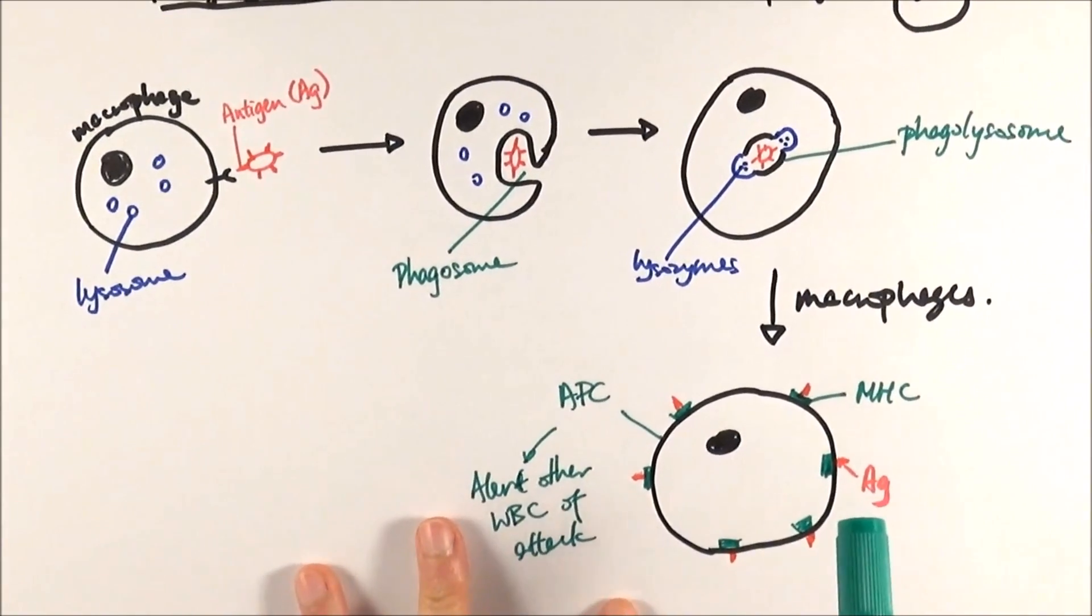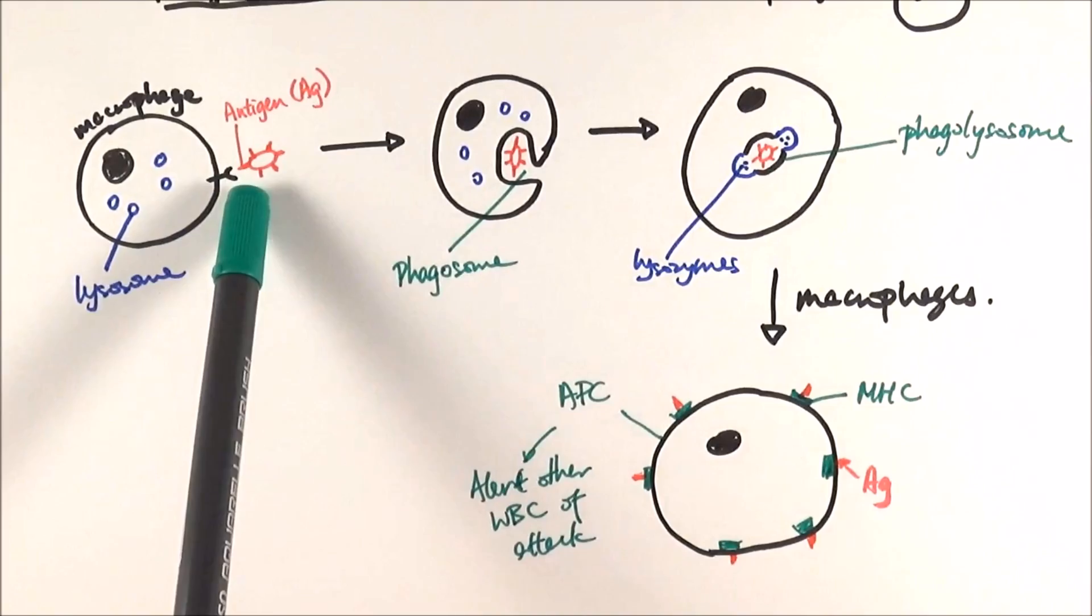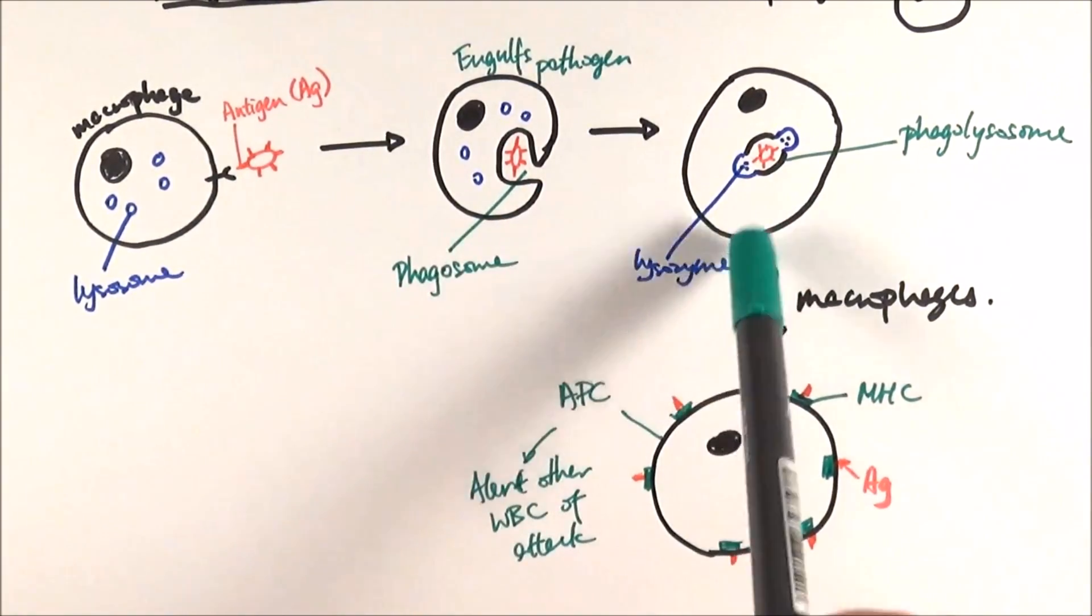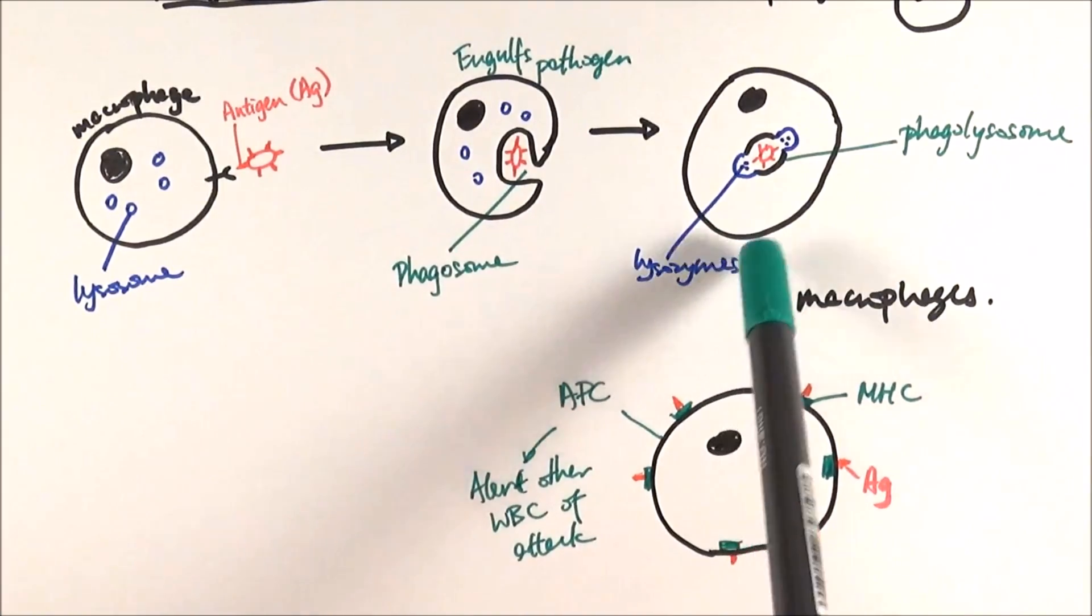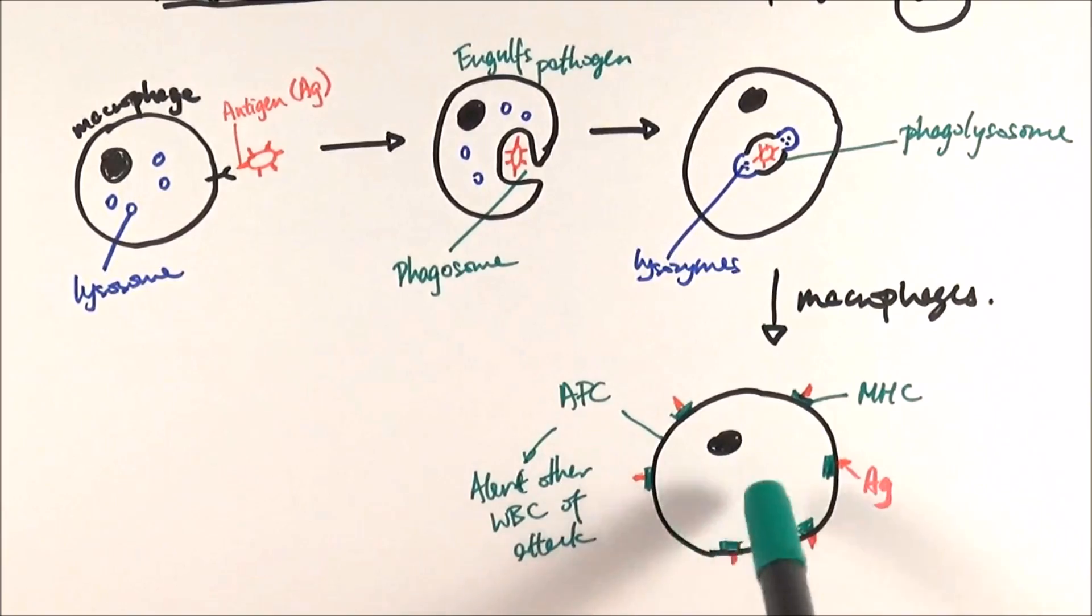And that's pretty much it for the process. Macrophage, with lysosome, recognises a foreign antigen, and they engulf it to form the phagosome, and then they fuse with the lysosomes, becoming a phagolysosome. Then the macrophages will digest everything except for the antigen, and bind them with the MHC, and put them onto the cell plasma surface, turning the macrophage into an antigen-presenting cell to alert other white blood cells of the attack.